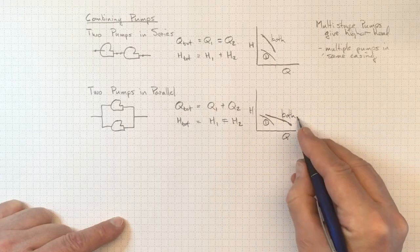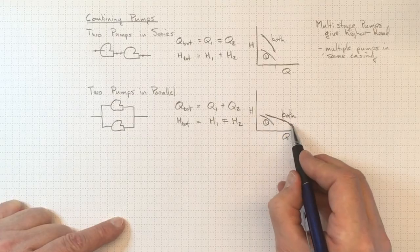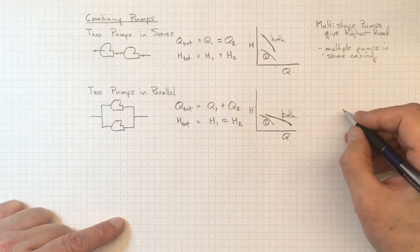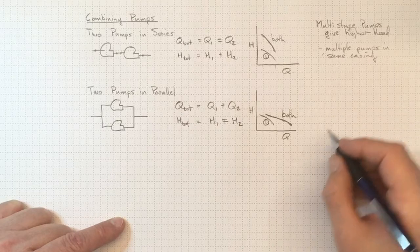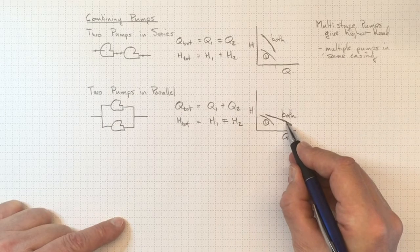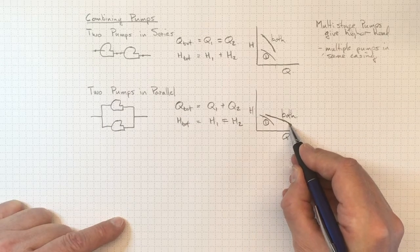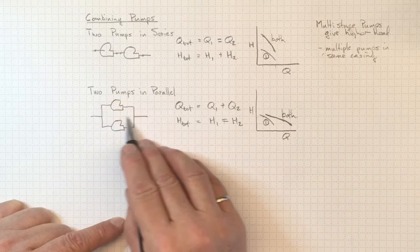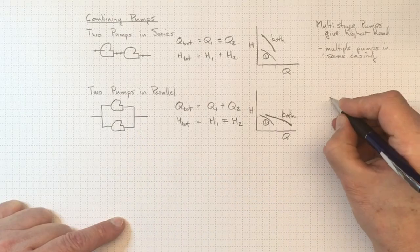So when I have both pumps operating in parallel, then I'll get much higher flow, but at the same head. The big advantage here is if we have a lower demand, if we don't need all of the flow rate, we can reduce the total flow provided by the pumping system simply by turning off one of these pumps.